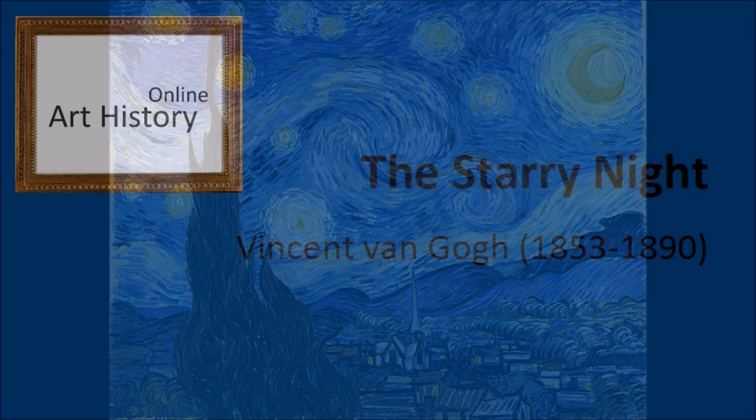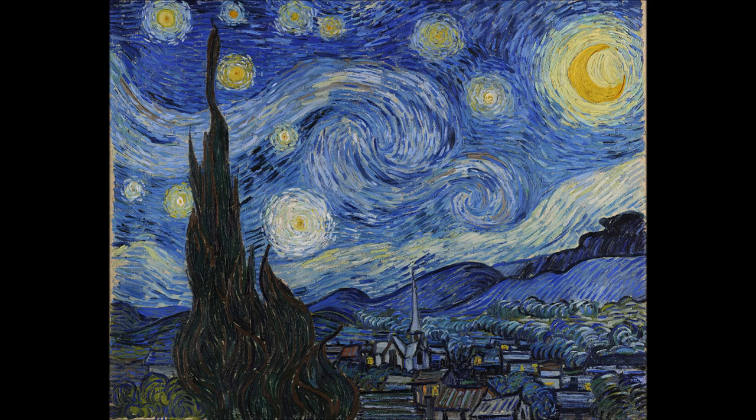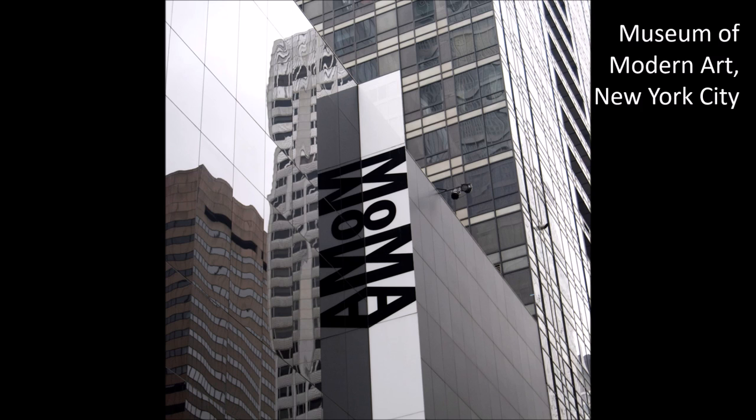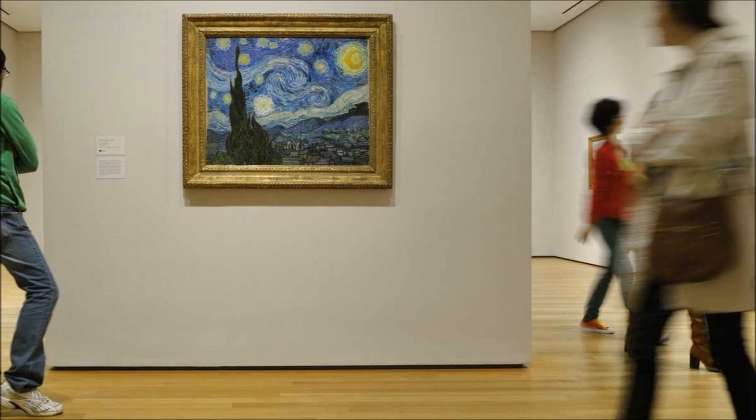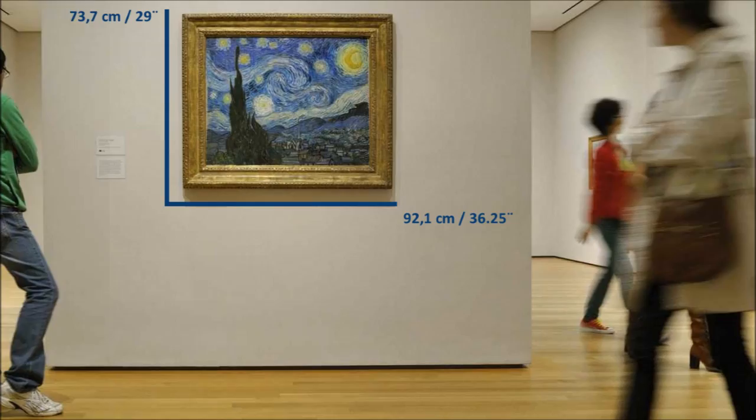Art History Online presents The Starry Night by Vincent van Gogh. Van Gogh painted The Starry Night in June 1889, about a year prior to his death. In 1941 it was acquired by the Museum of Modern Art in New York City. The oil-on-canvas painting measures 73.7 by 92.1 cm.